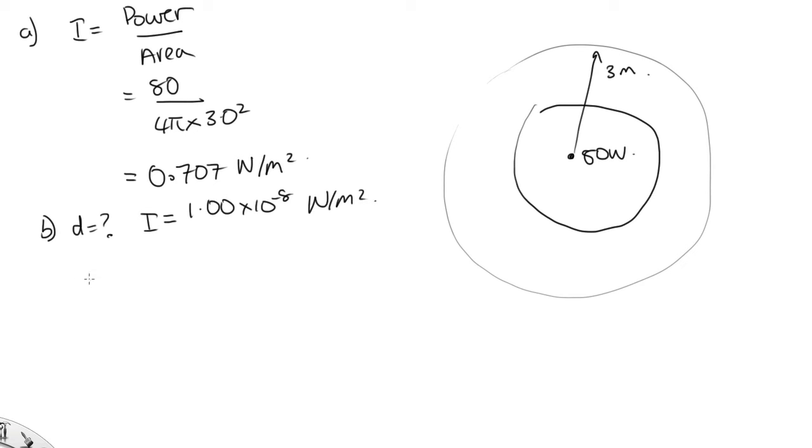OK, so we've got that 4 pi d squared is equal to, just rearranging this, the power over the intensity.